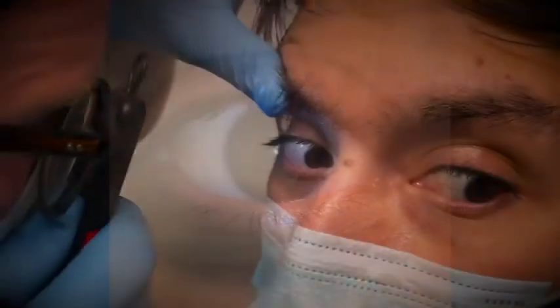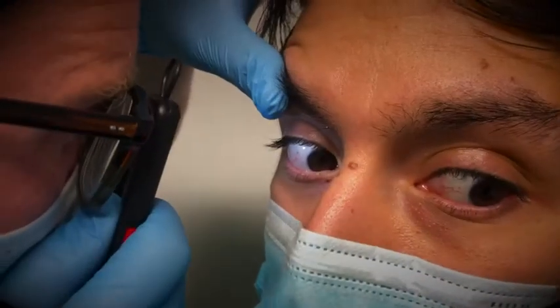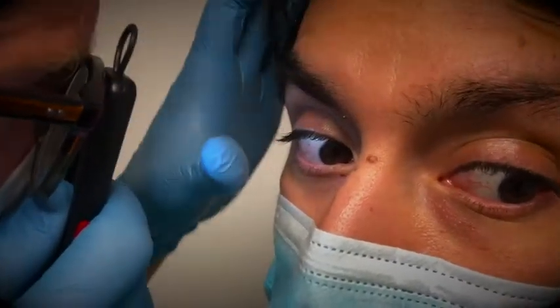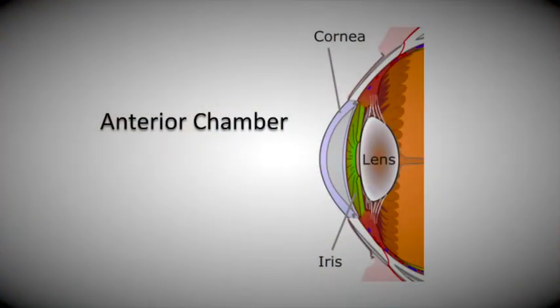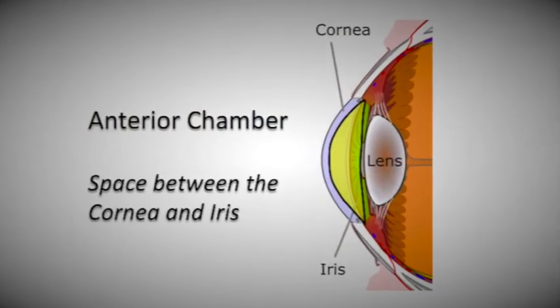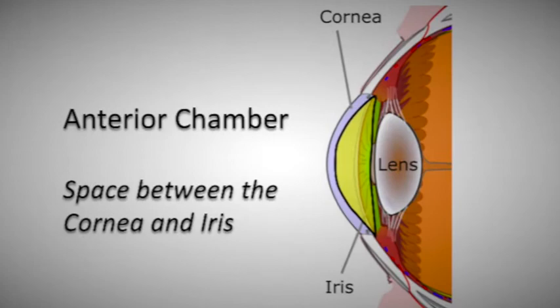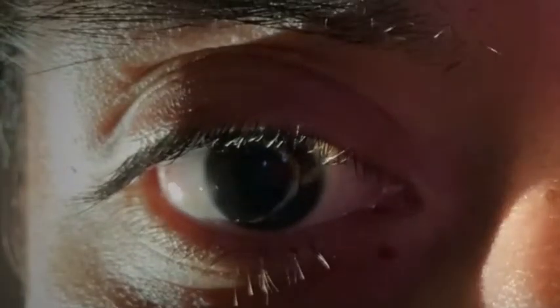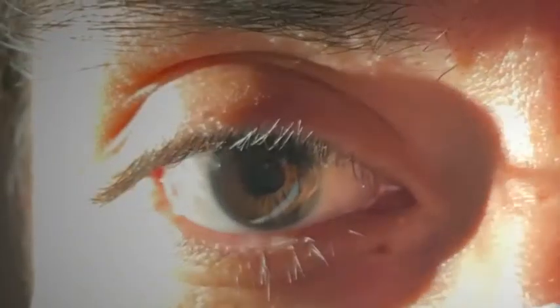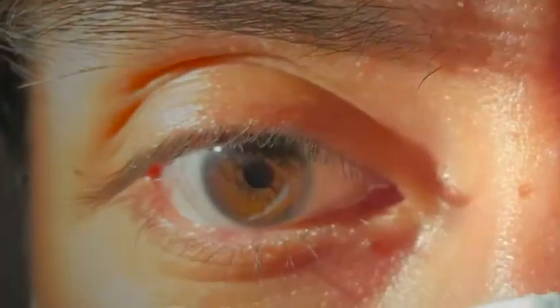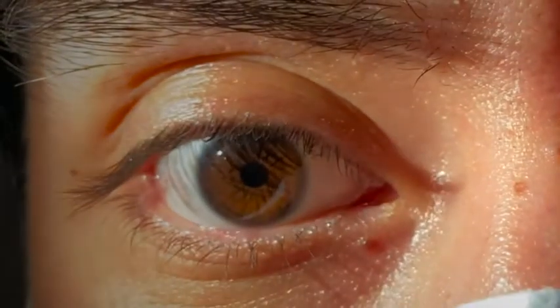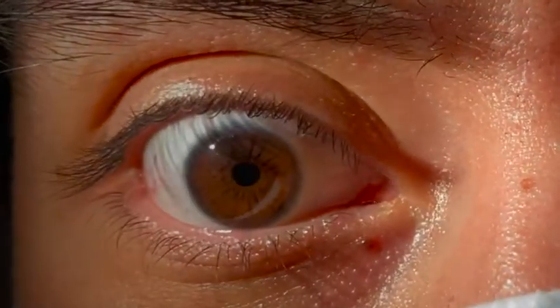Once you've finished noting all these structures, move on to assessing the anterior chamber depth. The anterior chamber is the space between the cornea and the iris. By shining the light from the temporal side, the depth of the anterior chamber can be assessed. A shadow on the nasal iris can suggest a shallow anterior chamber.